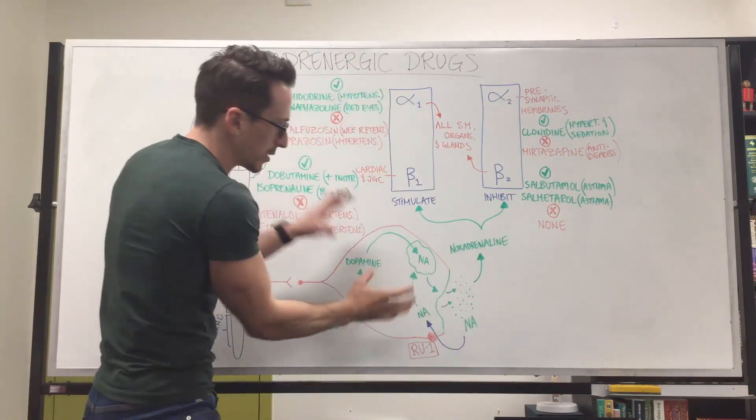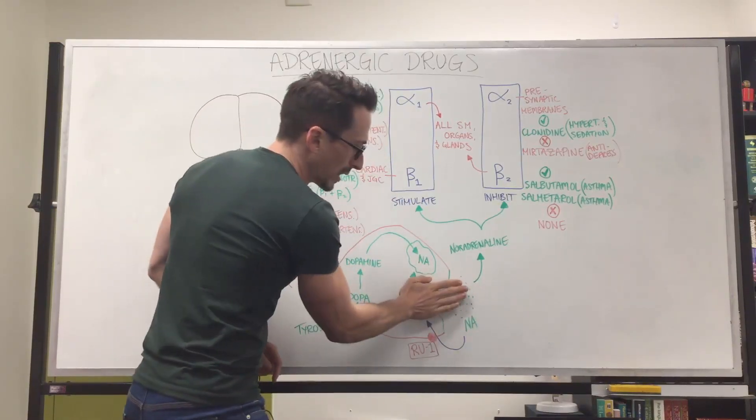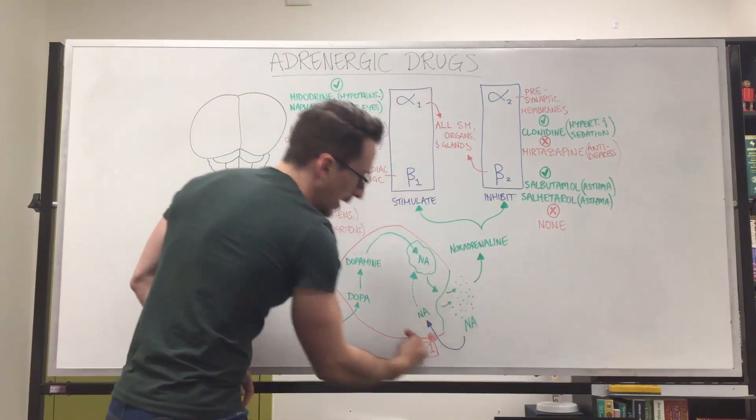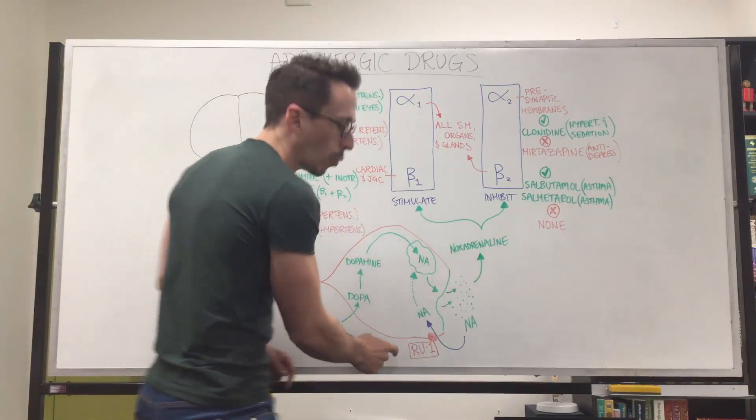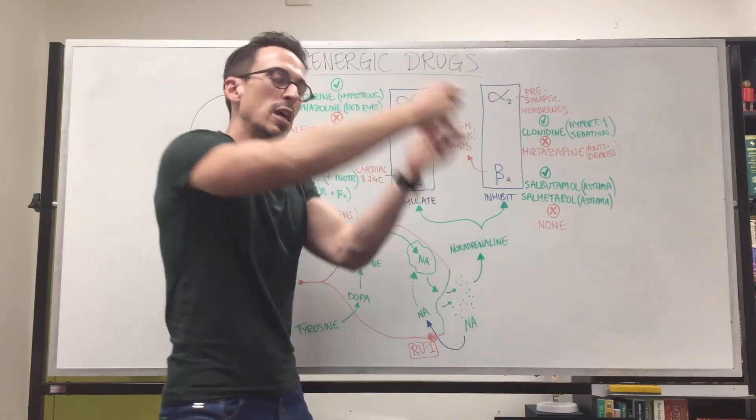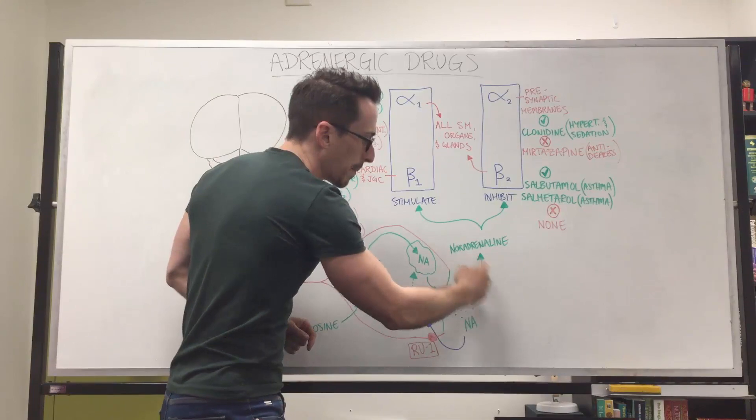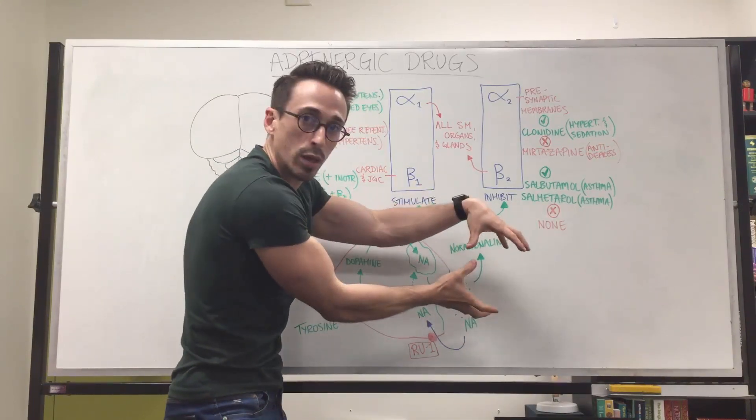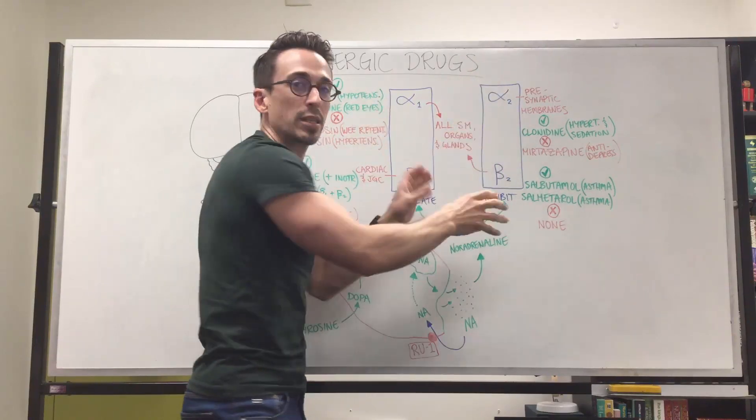Now let's just go back to this neuron that's producing noradrenaline. Once noradrenaline has been released it can jump back into the neuron to be released again by something called reuptake-1. This is a mechanism that takes all the noradrenaline that's out in the synapse and throws it back into the neuron. What this does is it reduces the amount of noradrenaline available at the synapse which reduces its effect on these particular receptors.